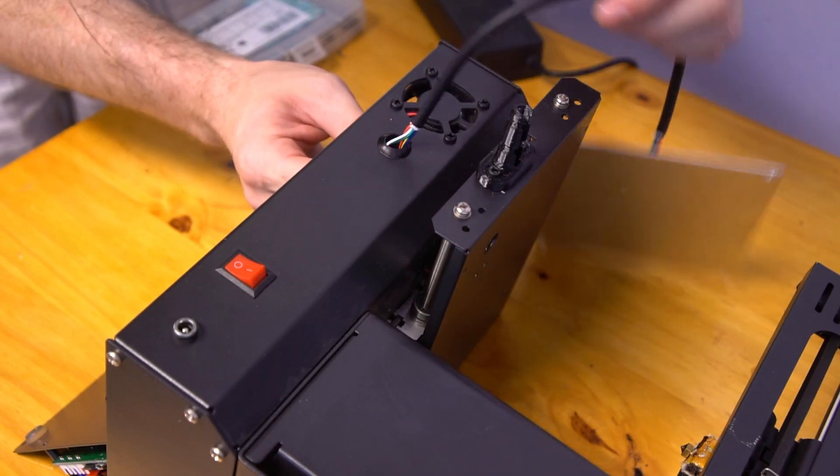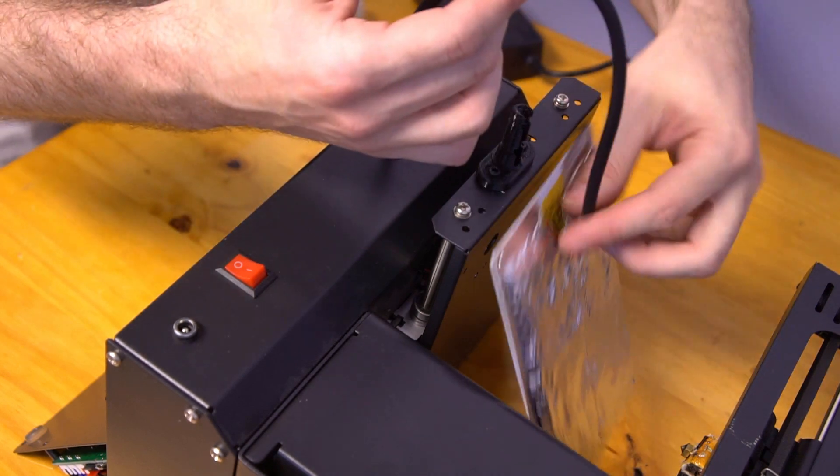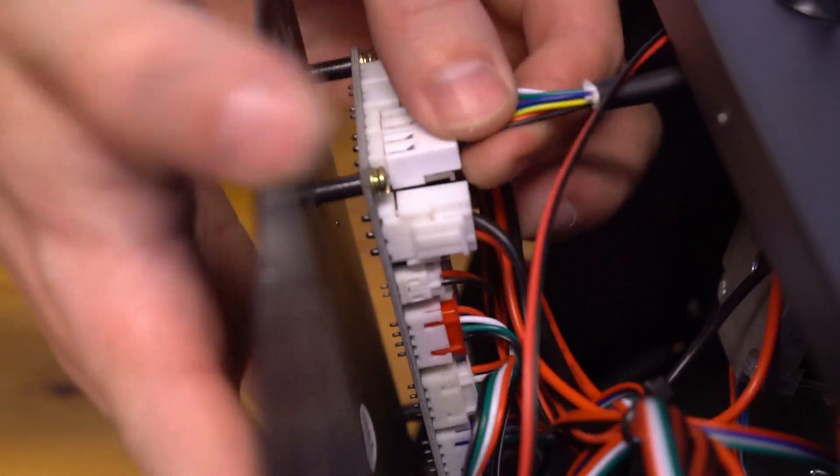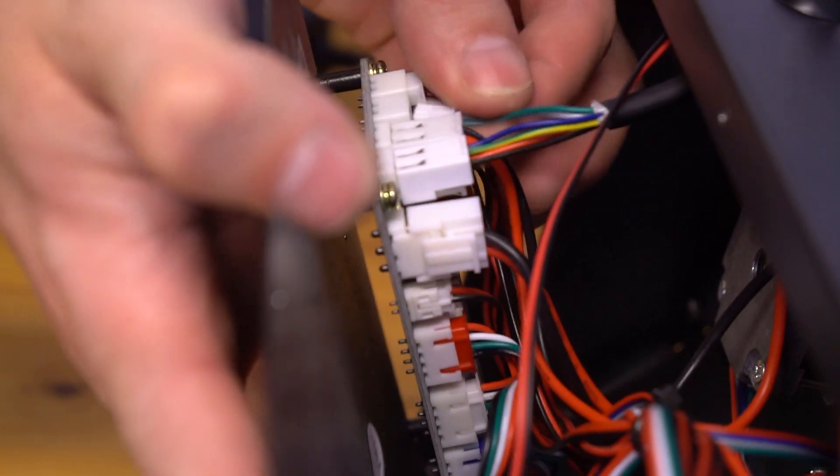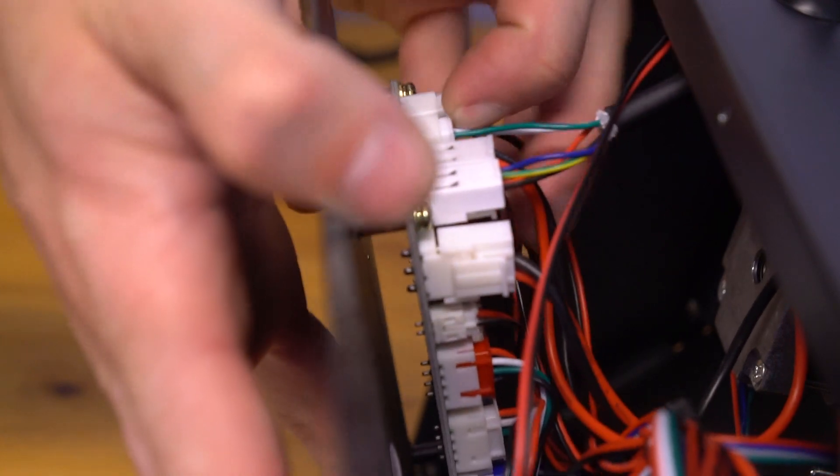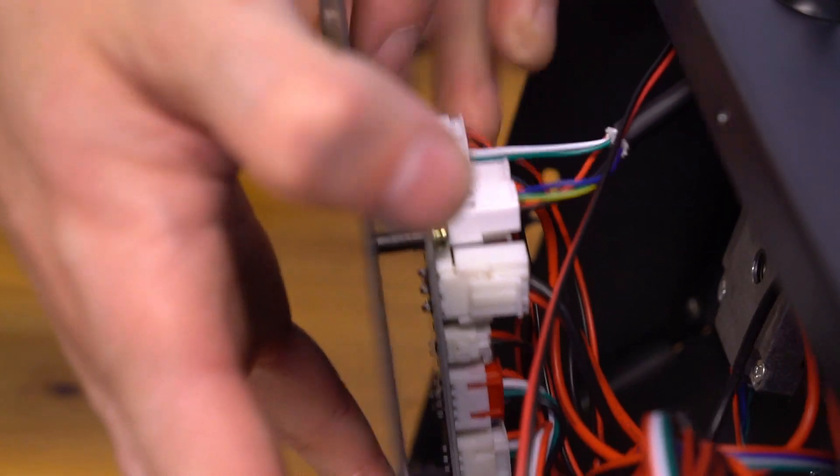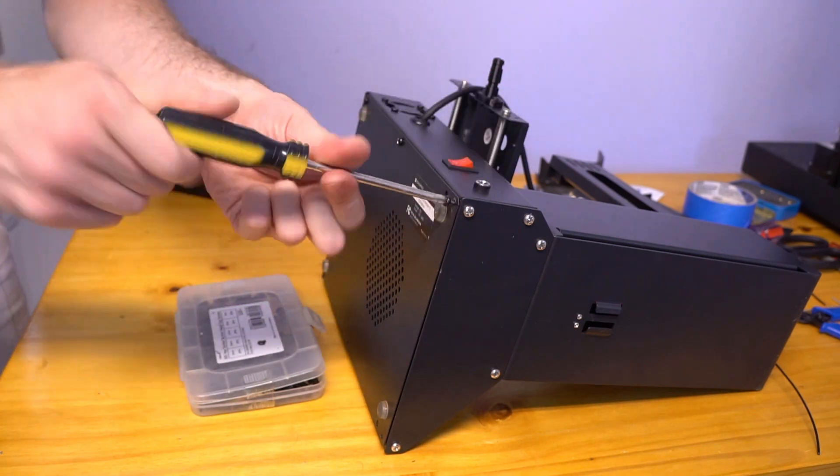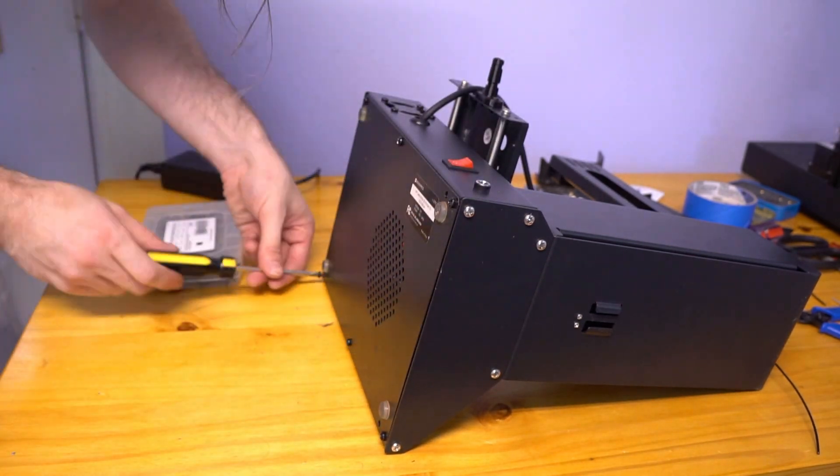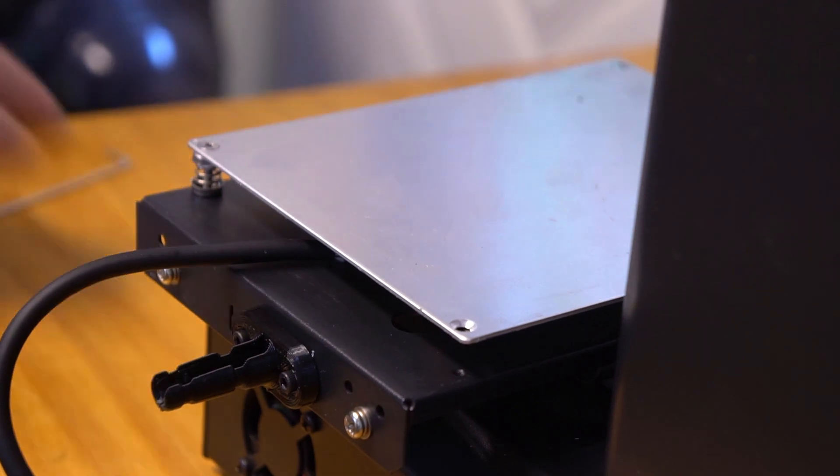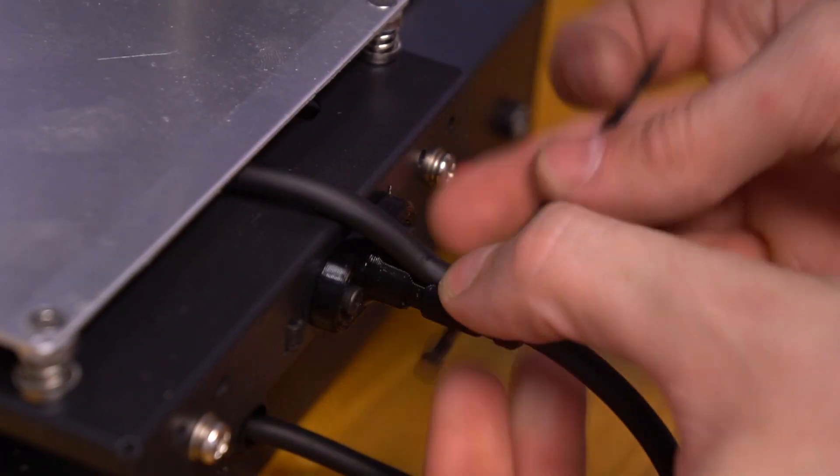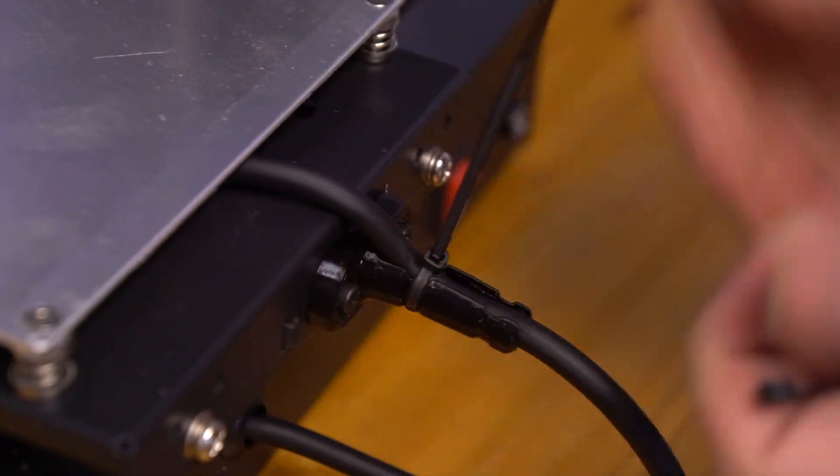I fed the cable through the new hole in the back of the machine. Reattached the wires in place on the board. And closed up the box. I reattached the heated bed. And anchored the cable in the strain relief with zip ties.